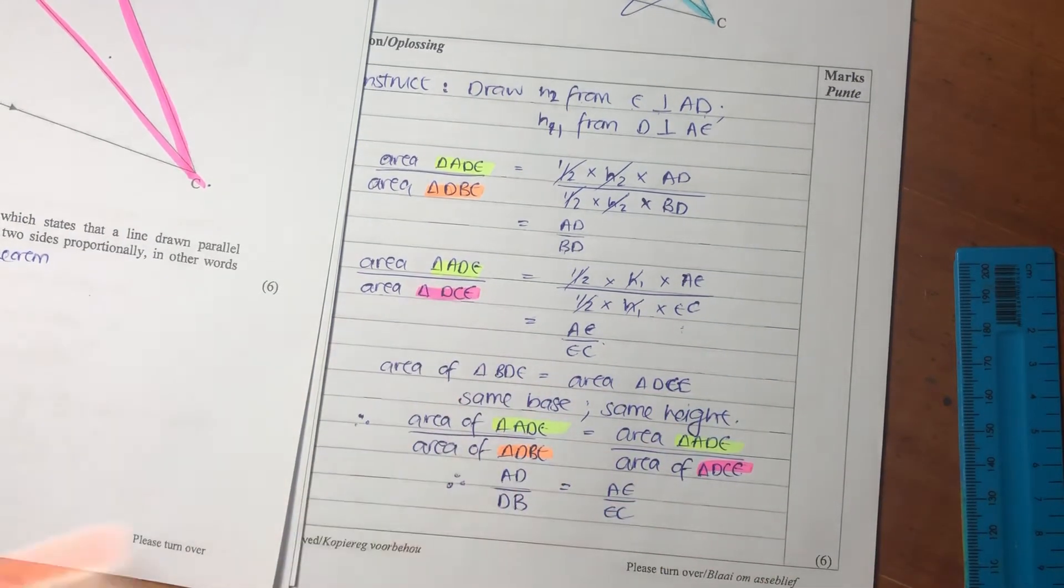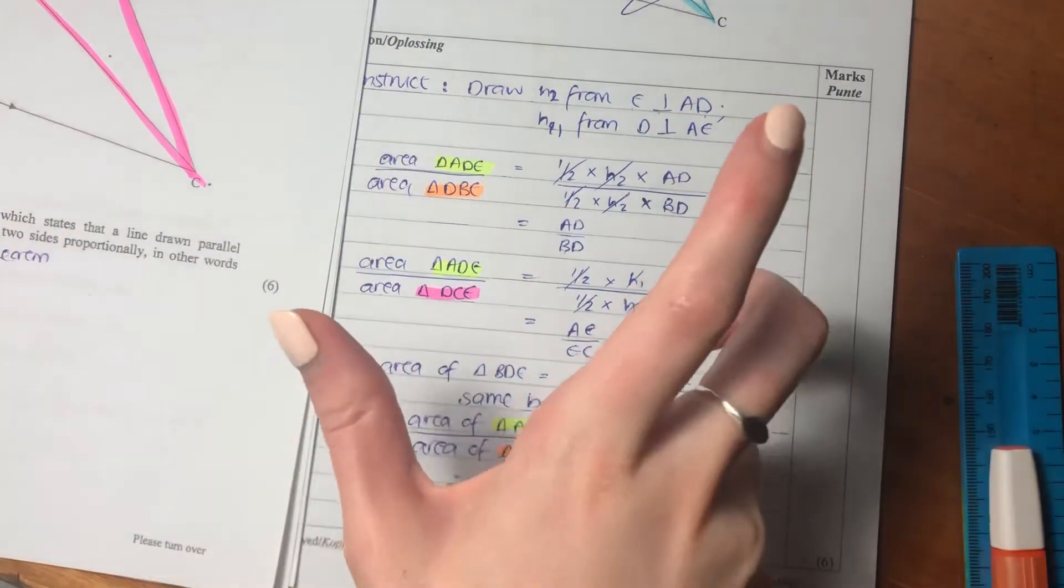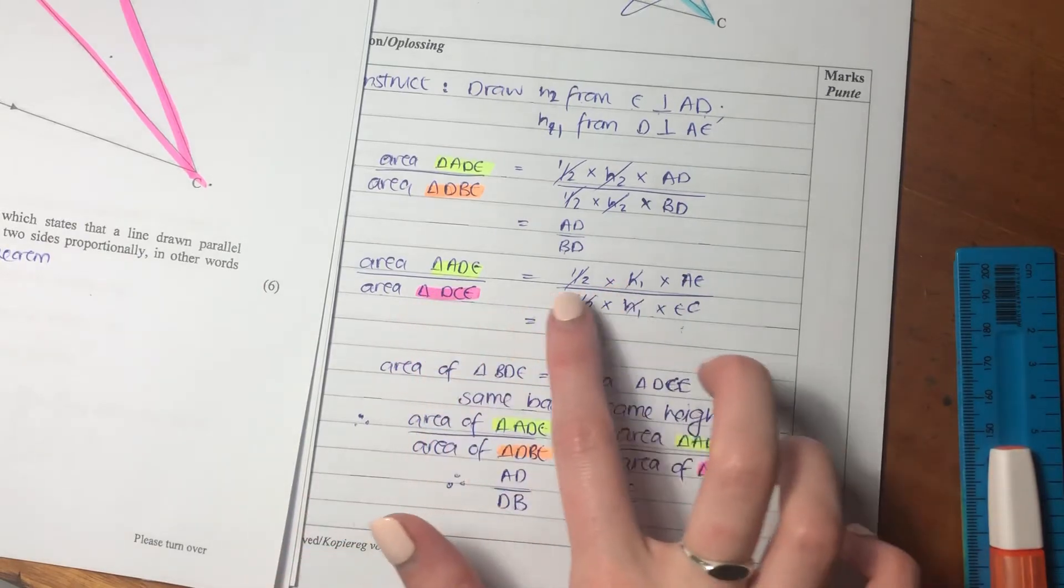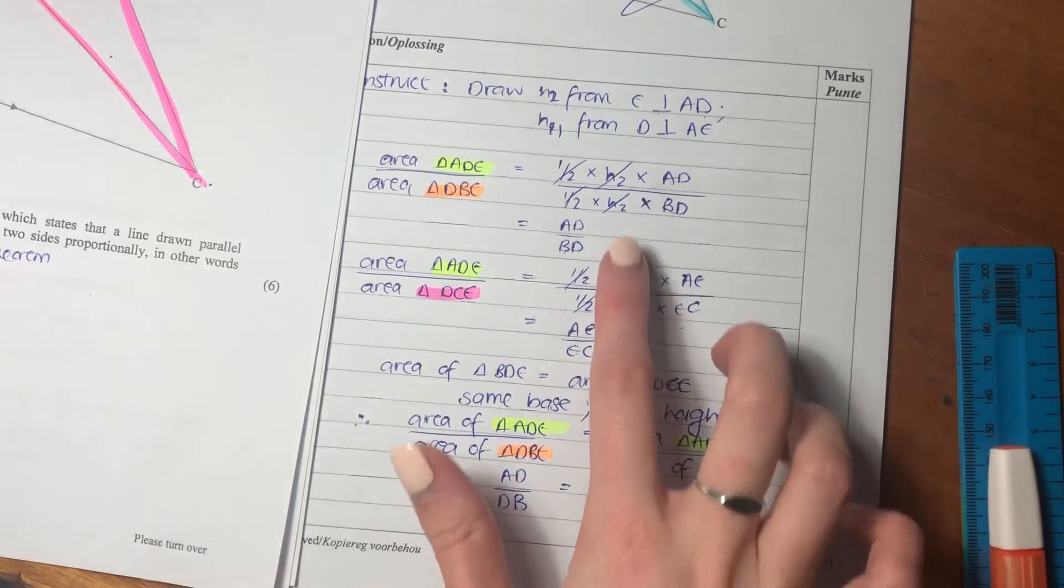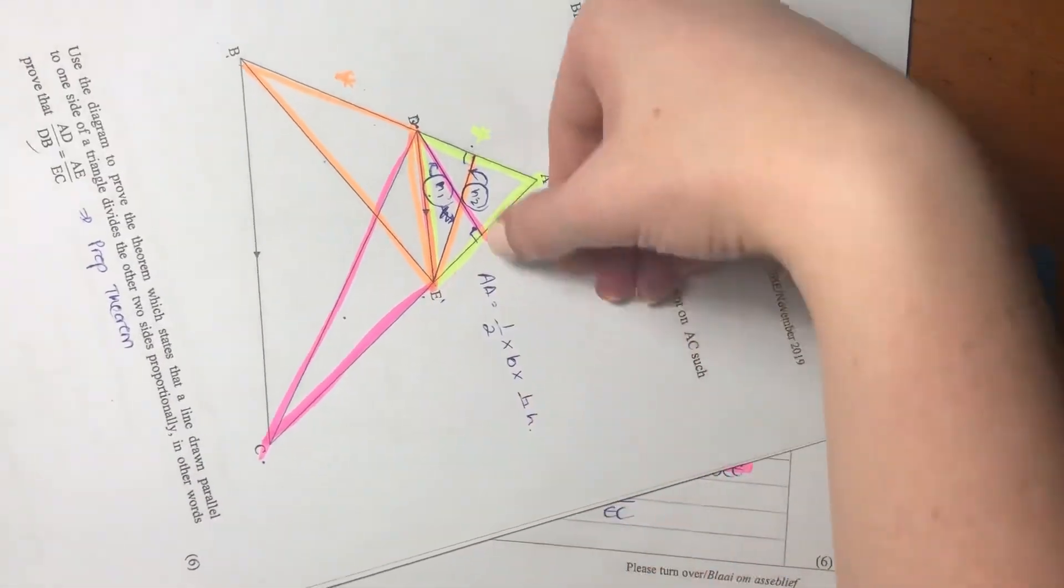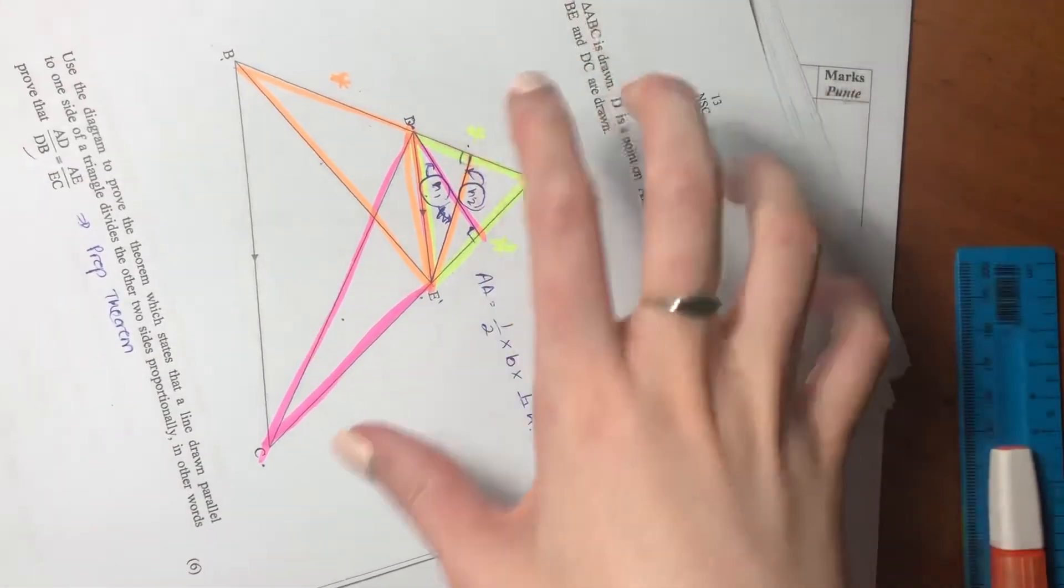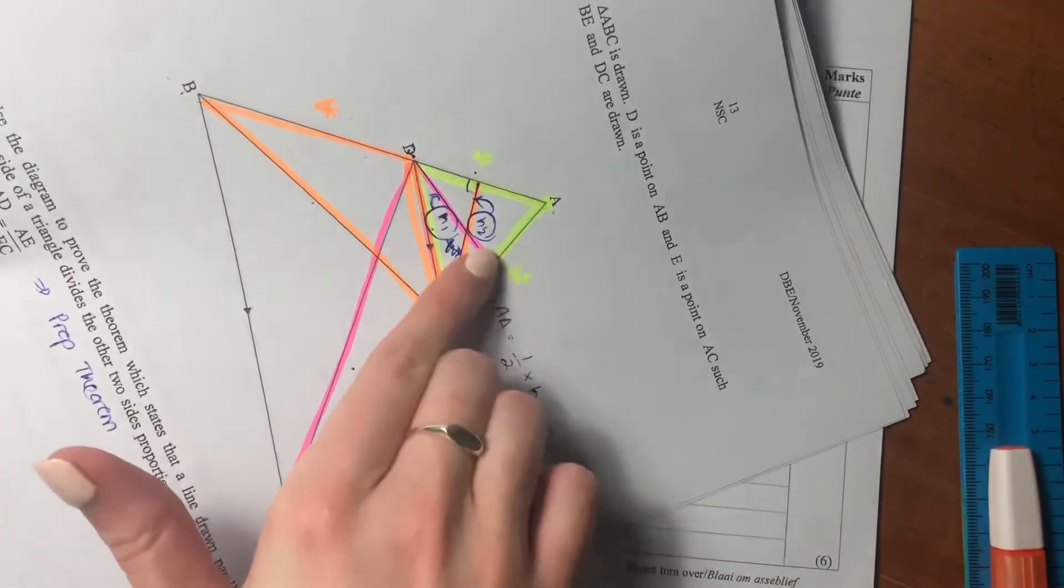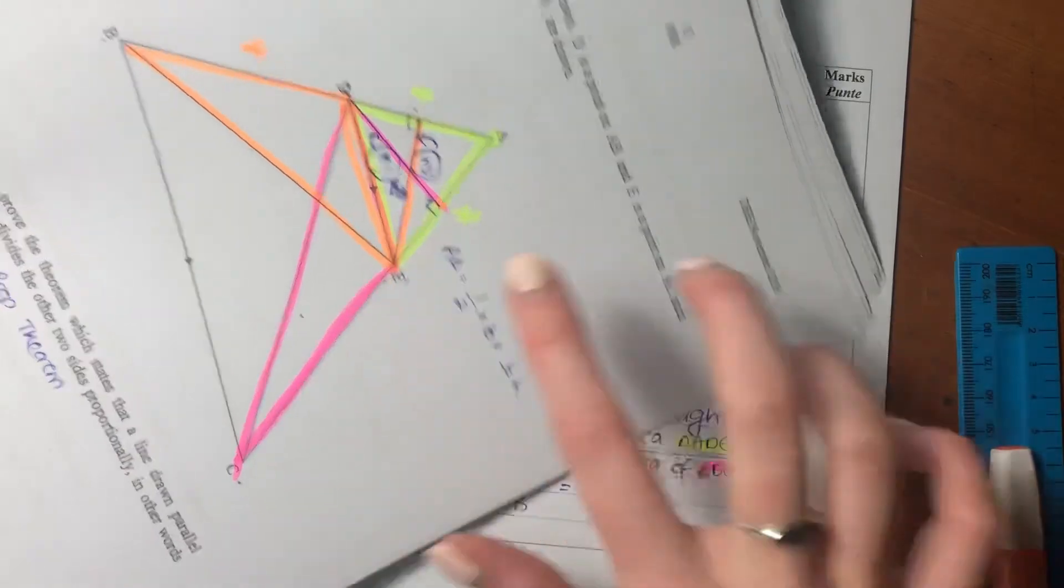So now I've said, we've done that side, let's now go look at the areas of ADE compared to DCE. So I put in ADE, very similar to the previous one that we did over here, except we're using AE as our base, and H1 as our height.